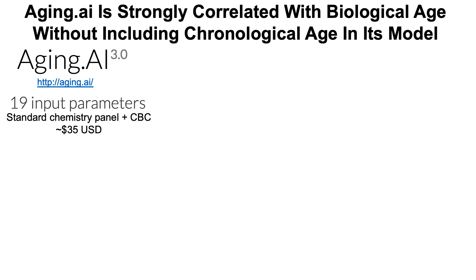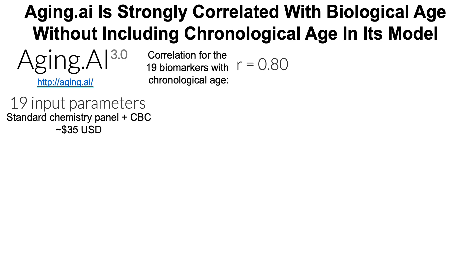Aging.ai includes 19 input parameters found on the standard chemistry panel and complete blood count (CBC). These are tests commonly performed at a yearly physical with your general practitioner, and their cost is relatively cheap at about $35 in the US. Note that C-reactive protein is not included on this list, which is kind of an extra measurement when you go to the doctor. So potentially it's easier to just get the standard chem panel and CBC.